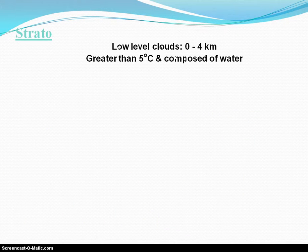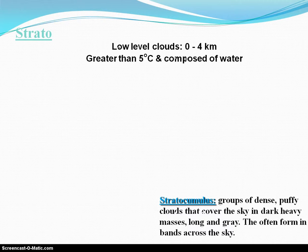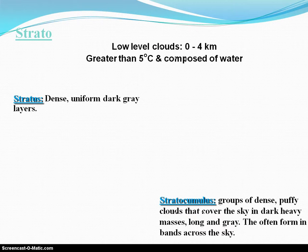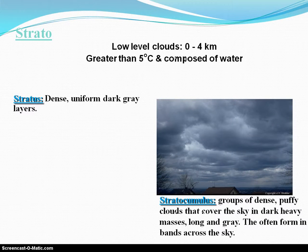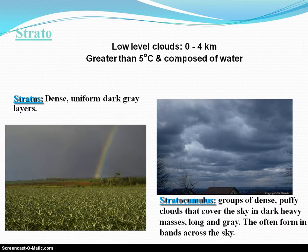Your low-level clouds, lowest in the troposphere — you have stratocumulus, and then your regular stratus. Here's a picture of your stratocumulus low to the ground, with that puffy, cotton-ball look to them. And then your normal stratus clouds that are low to the ground — once again, that sheet-like gray blanket of cloud cover.